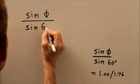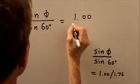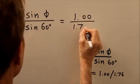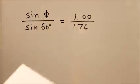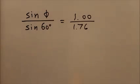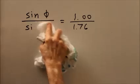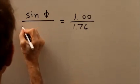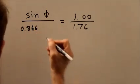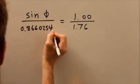Here's our formula again: the sine of phi over the sine of 60 degrees equals 1.00 divided by 1.76. That's our starting point. Using our calculator, we can find that this value right here, the sine of 60 degrees, is 0.8660254.